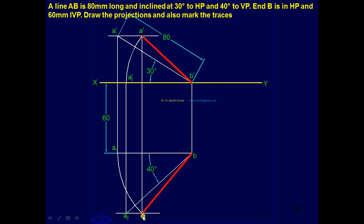Then to get the HT, extend the top view till it cuts that projector. On that projector only, the point B is already there. That means the point B itself is the horizontal trace. So this is the answer. Horizontal trace part is over.